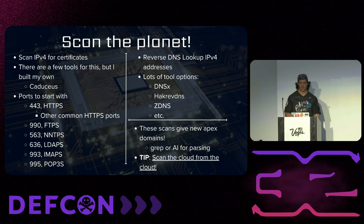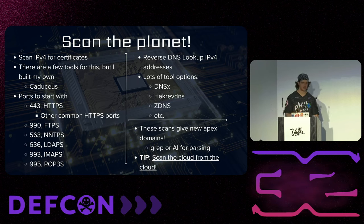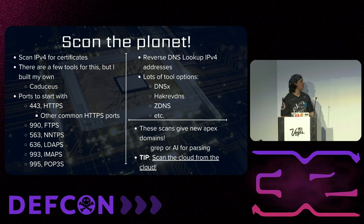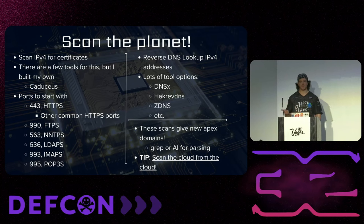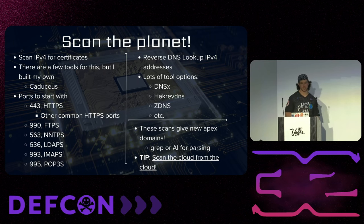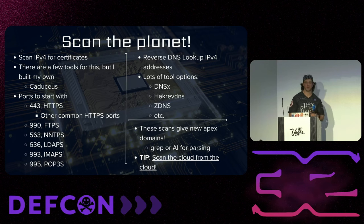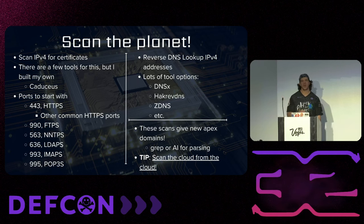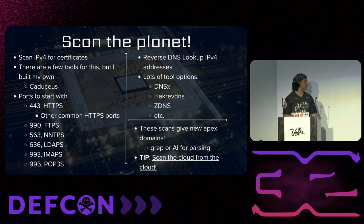Those scans can give you Apex domains and subdomains. I've found a lot of Apex domains just looking around the internet — you'll find something that says Yahoo on it you've never seen before, then go back and check who it's registered to and confirm it belongs to that company. If you're scanning the IPv4 space, a big chunk of that is cloud providers. Scanning a cloud provider from within the cloud provider is disgustingly fast. If you scan US-East-1 in AWS from US-East-1, you can finish in about a minute. But I didn't tell you that.